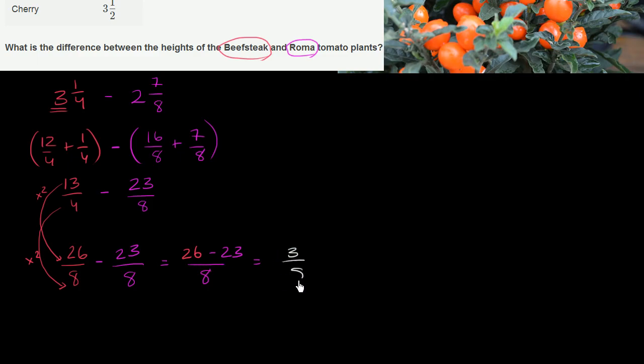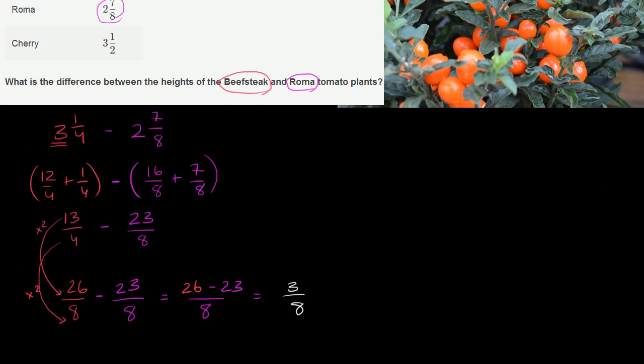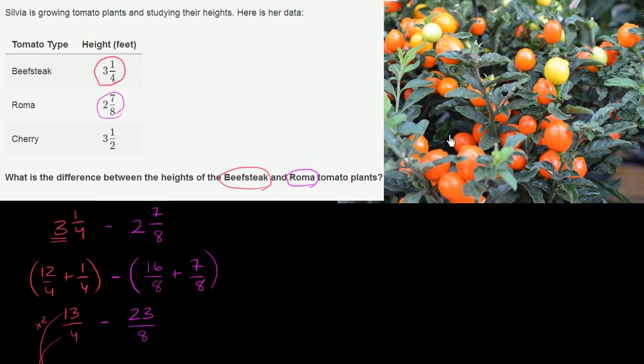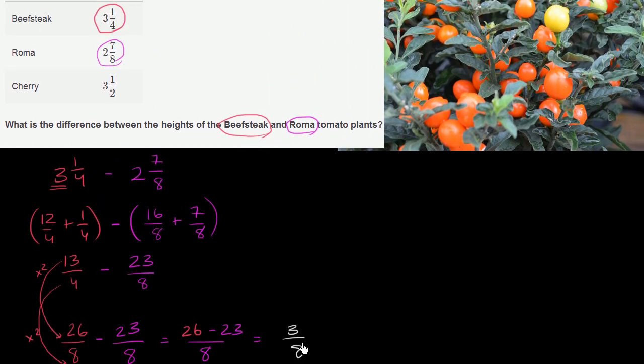So it's 3 eighths. So the difference between the heights of the beefsteak and Roma tomato plants, 3 eighths and everything we've been doing so far has been in feet. So 3 eighths of a foot.